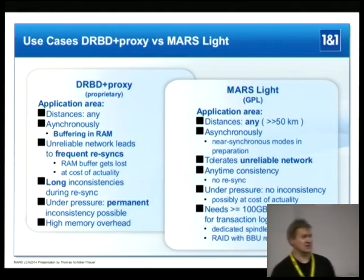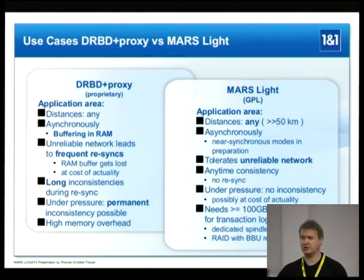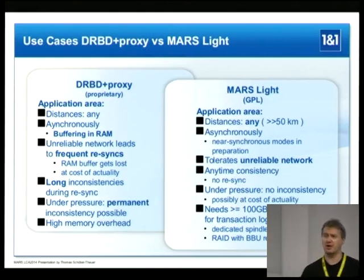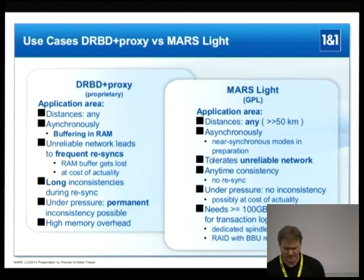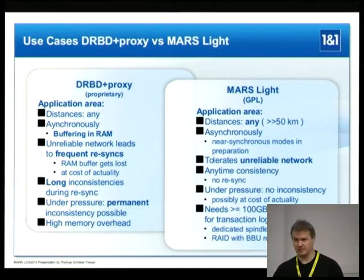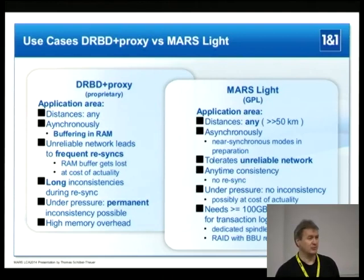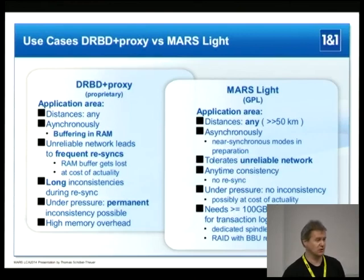You have long inconsistencies during that re-sync, and the more data you lose from the buffer, the more you have to replicate during the re-sync phase. If you have networking problems or a very slow network, you may end up with a permanently inconsistent mirror.